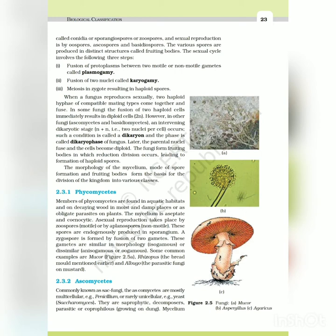Phycomycetes - members of phycomycetes are found in aquatic habitats and on decaying wood in moist and damp places, or as obligate parasites on plants. The mycelium is aseptate and coenocytic. Asexual reproduction takes place by zoospores (motile) or by aplanospores (non-motile). These spores are endogenously produced in sporangium. A zygospore is formed by fusion of two gametes. These gametes are similar in morphology (isogamous) or dissimilar (anisogamous) or oogamous. Some common examples are Mucor (Figure 2.5), Rhizopus (the bread mold mentioned earlier), and Albugo (the parasitic fungi on mustard).